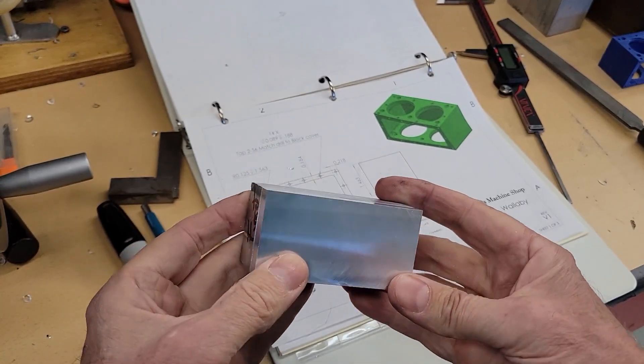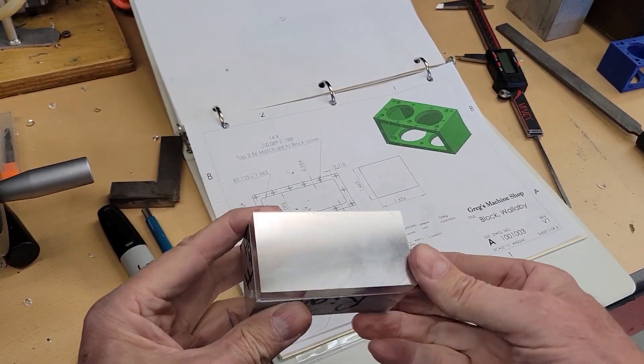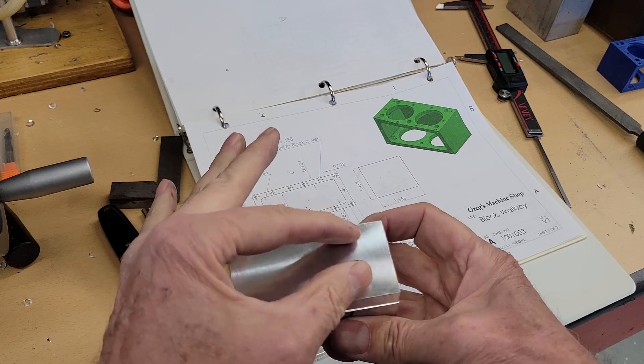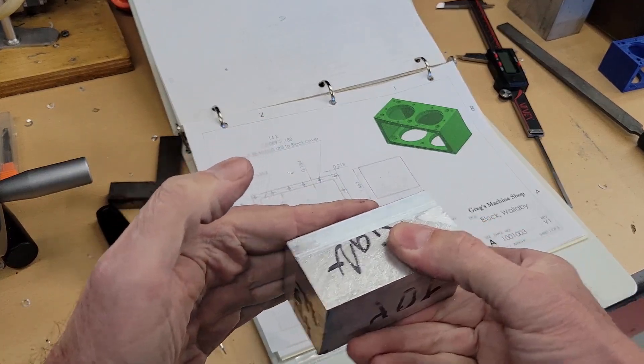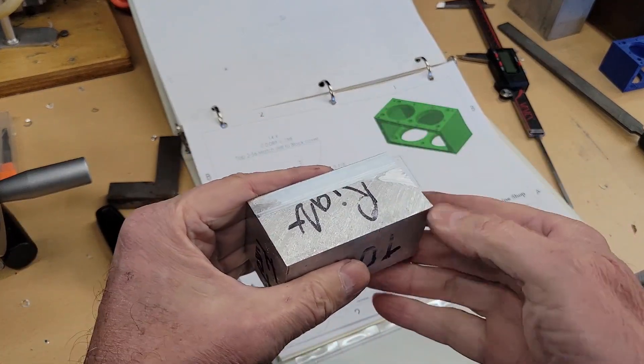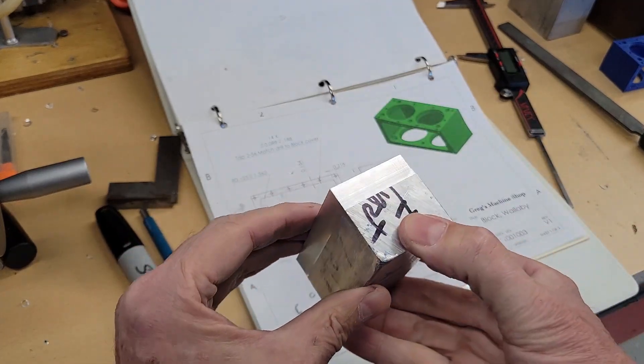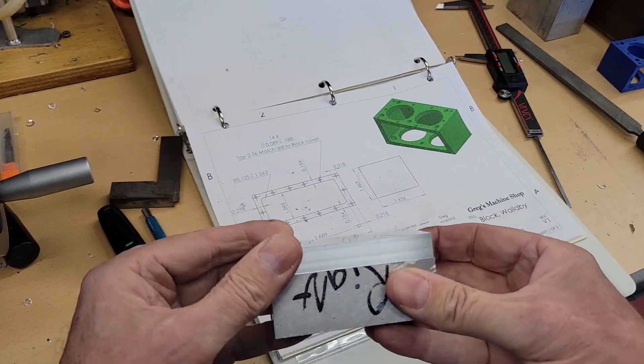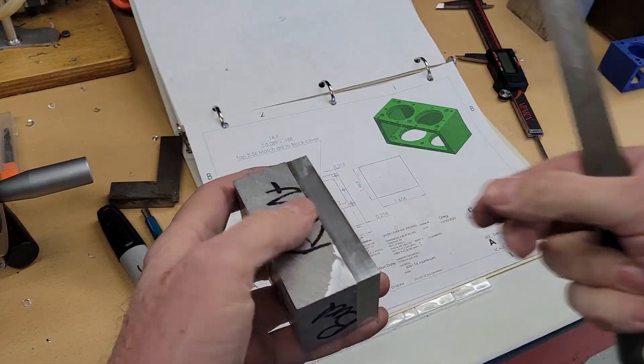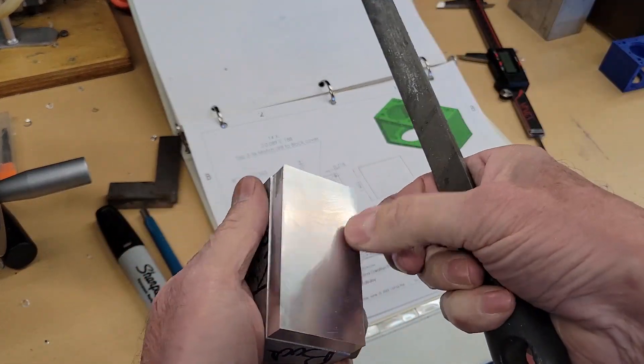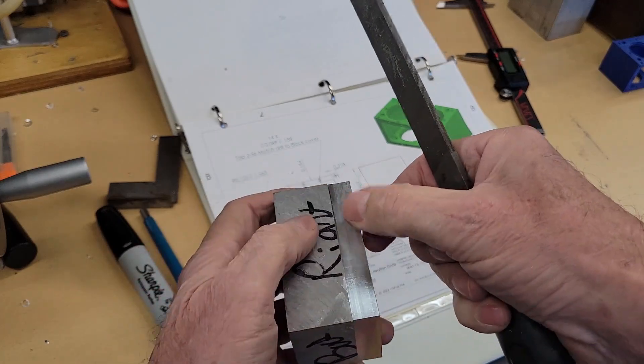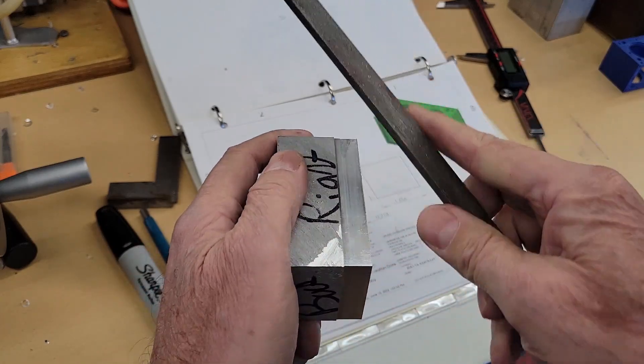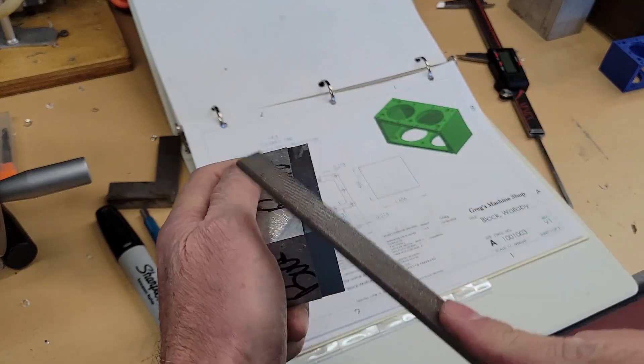So now I have five good reference sides and by using the parallels and the face of the vise I can finish off all the rest of the sides to proper dimension and be relatively ensured they'll be square. I need to knock all these edges off of here so they don't interfere in my measurements or in the vise. So I'll do that.